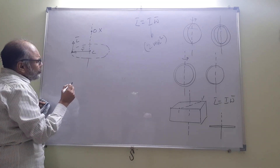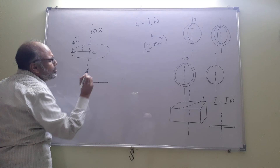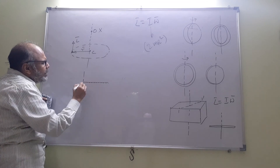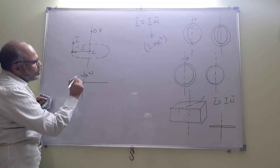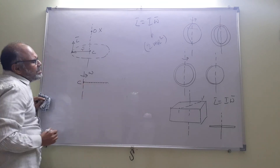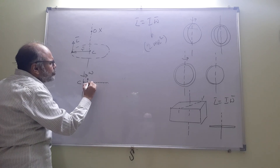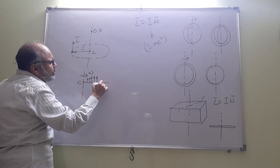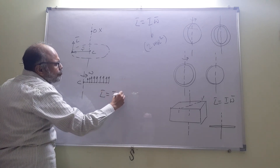Coming to a thin rod: a thin rod is a collection of several points. Even if the axis is at one end of the rod as it rotates, if you find the angular momentum of each point about the center C, for every point the angular momentum is along the axis. So the total angular momentum will be in the direction of omega. Thank you.